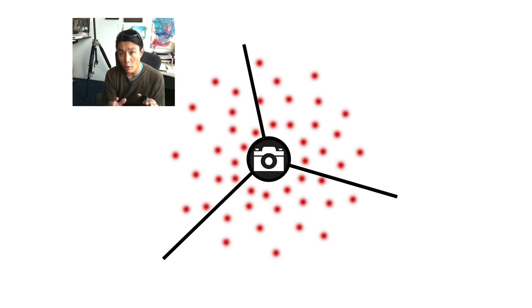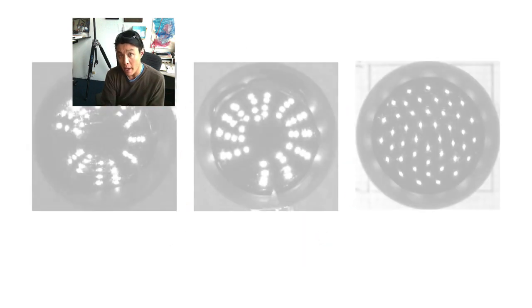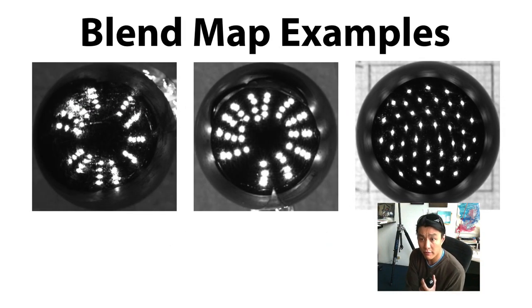A really good way to look at your light positions is to examine the blend map. On the right, we have our array.